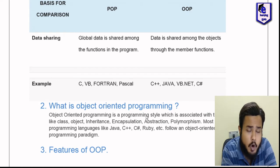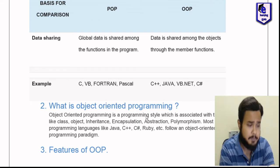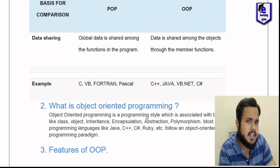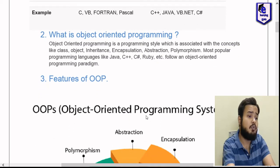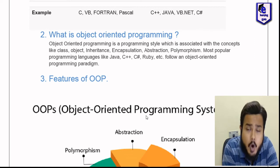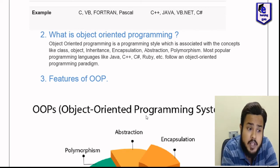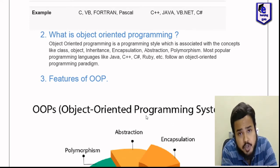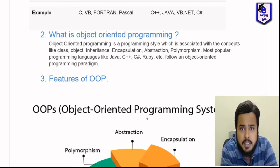What is OOP? OOP languages include C-Sharp, C++, Java, VB.NET. We can see the basic comparison between POP and OOP. Object-oriented programming is a programming style which is associated with concepts like class, object, inheritance, encapsulation, abstraction, and polymorphism. In this programming style, we need to be able to use these features.